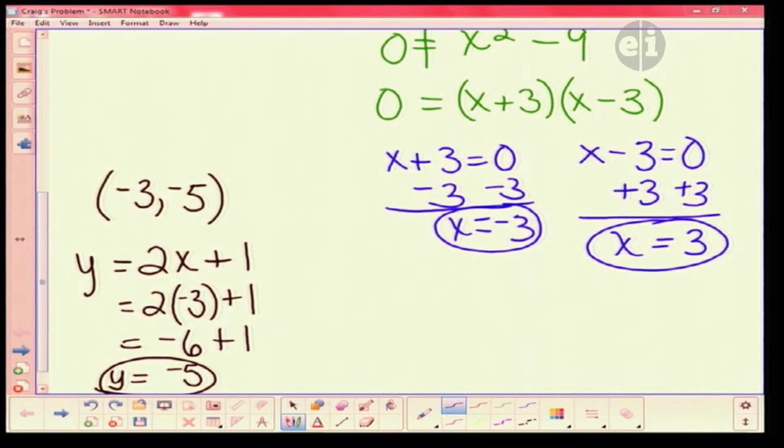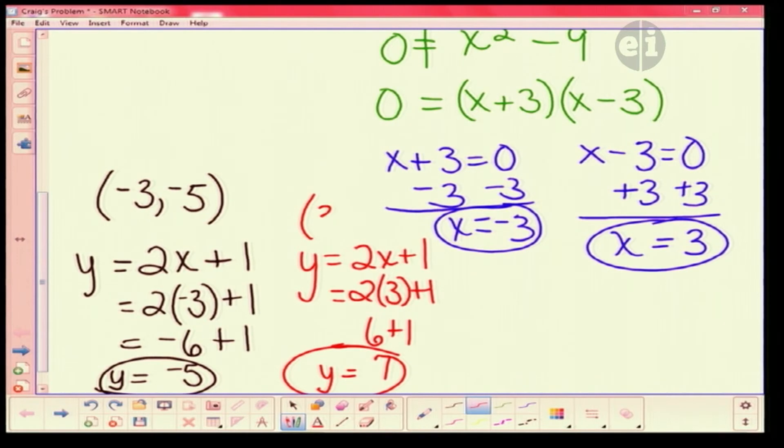And now we have to do the other one. Y is equal to 2x plus 1. And we're going to plug in the positive 3, the other answer. So I have 2 times 3 plus 1. So I get 6 plus 1. So it equals 7. So y must be 7. Which means my second point is a positive 3, positive 7.